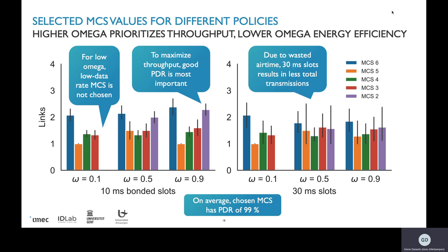With the slot bonding approach, we were able to allocate on average 6.7 out of 7 links to node parents, while with 30 ms slots only around 4.7 links on average could be allocated. Due to wasted airtime, the 30 ms slot approach resulted in fewer successful transmissions.